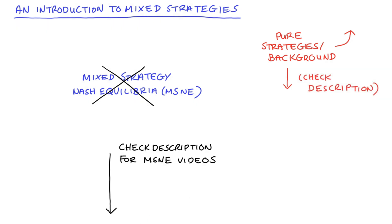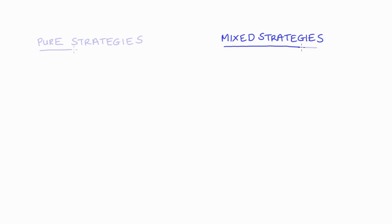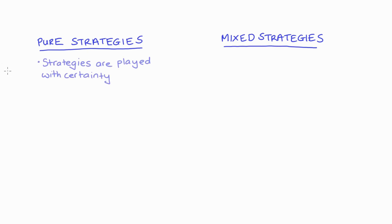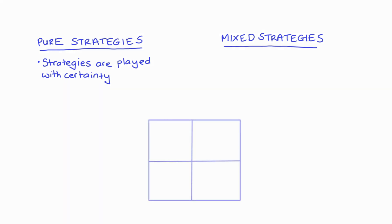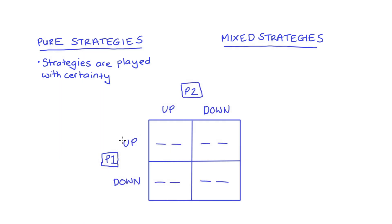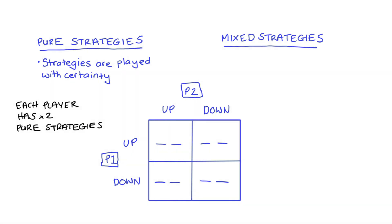The first thing I want to do is distinguish between mixed strategies and pure strategies. Pure strategies is the more rudimentary theory — the one that game theory is usually introduced with in textbooks and courses. In pure strategies, our players' strategies are only ever played with complete certainty. In our common two-by-two matrix — I'll put up an example here — we have two players with two actions each. They can either go up or down, and these actions correspond to their two possible pure strategies.